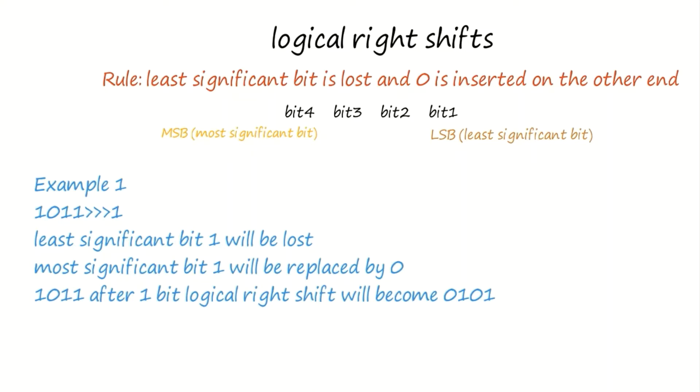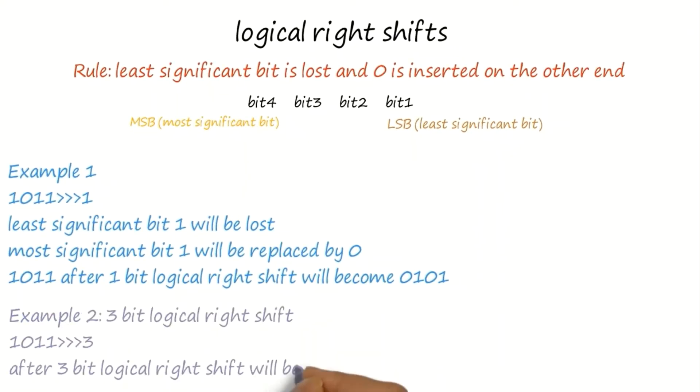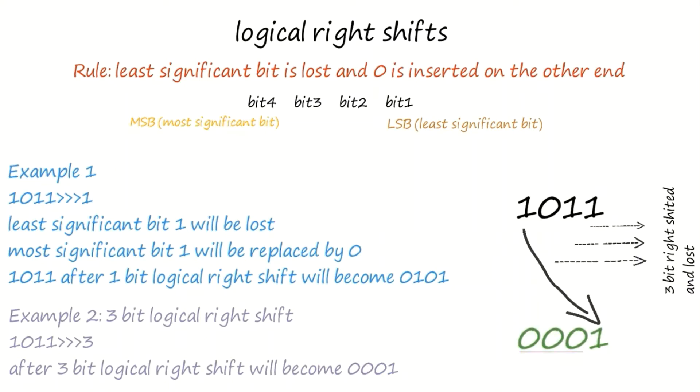It will be clear when we perform 3-bit right shift on the same, where the last 3 bits will be lost, MSB comes at extreme right, and 3 zeros will be appended at right.